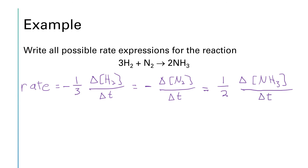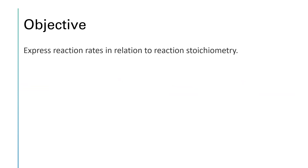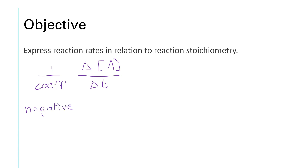So we have three different expressions that help us define the rate. Which one we actually use in an experiment would be determined by what equipment we have. Our objective was to express reaction rates in relation to reaction stoichiometry. Remember: we take one over the coefficient out in front of our expression, we have the change in the concentration of a chemical over the elapsed time, and this is negative if the chemical we're monitoring is a reactant, and positive if the chemical we're monitoring is a product.